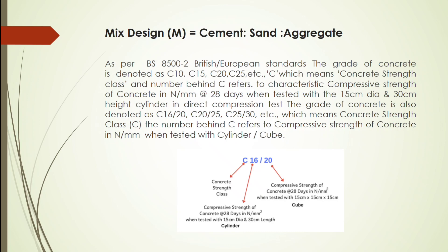Mix design: M = cement : sand : aggregate. As per British and European standards, the grade of concrete is denoted as C10, C15, C20, C25, etc. C stands for concrete strength class, and the number after C refers to the characteristic compressive strength of concrete in N/mm² at 28 days, when tested with a 15 cm diameter and 30 cm height cylinder in a direct compression test.